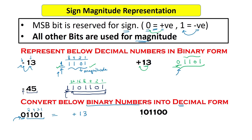Next binary number: 101100. The sign bit is 1, meaning the result will be a negative number. For the magnitude, we take the remaining bits: 1100, which gives 8 plus 4 equals 12. So this binary representation means minus 12.